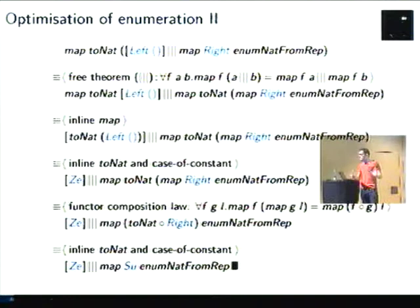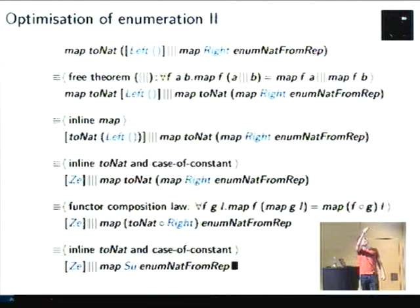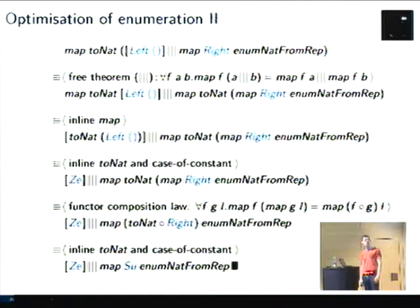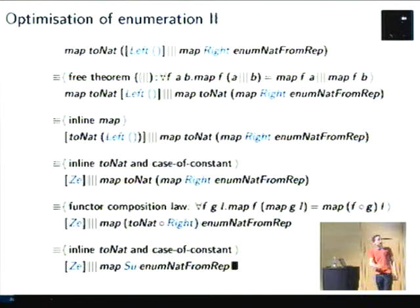Now we have a map over an interleave, and given the free theorem of interleave, we can distribute the map over the interleave. So we now have two maps — one on the left and one on the right. On the left is a map over a single element, so we can just apply the function. We then inline to-nat, which is a case analysis on a constant — left unit — which we directly replace by zero, the constructor of nat. On the right we have a map applied to a map, so we use the functor composition law to fuse these two into a single map. Inlining to-nat again, it does case analysis on right, which is exactly the successor constructor. So we arrive at a fully specialized enumeration on naturals with no conversions.